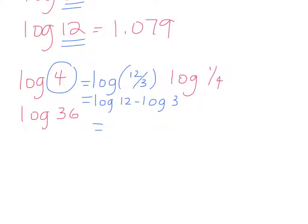So this means that I would have log of 12 minus log of 3. You're using that subtraction rule. So this then would be log of 12, which was 1.079, minus log of 3, which was 0.477.